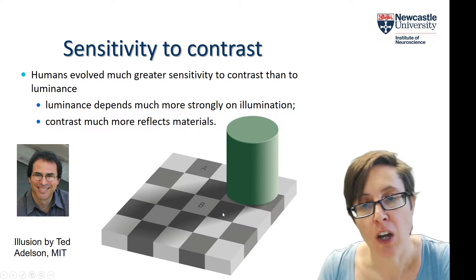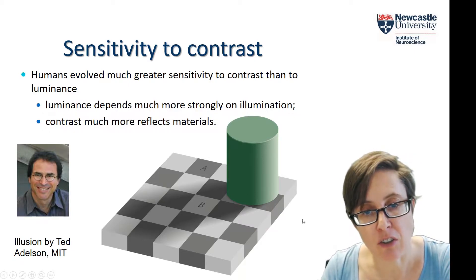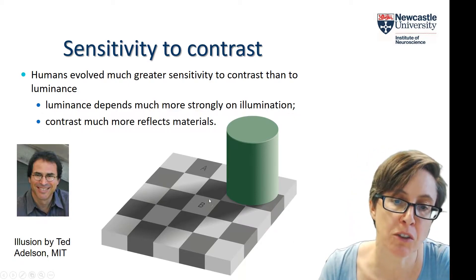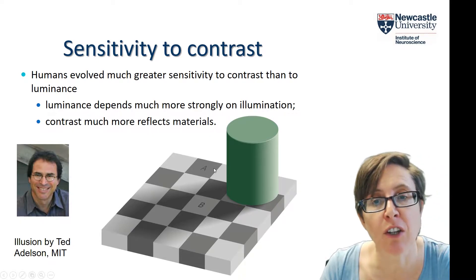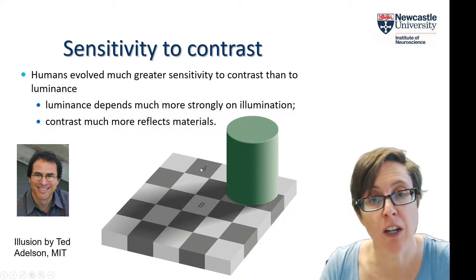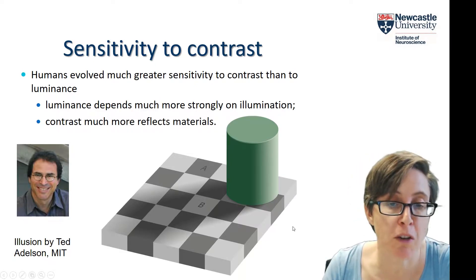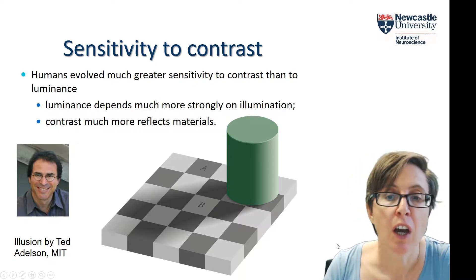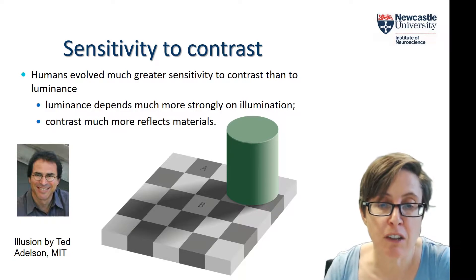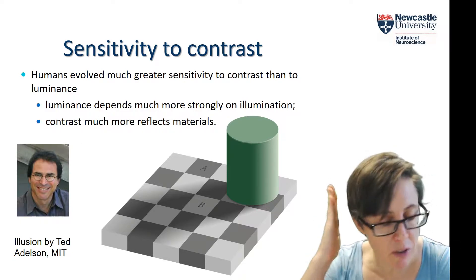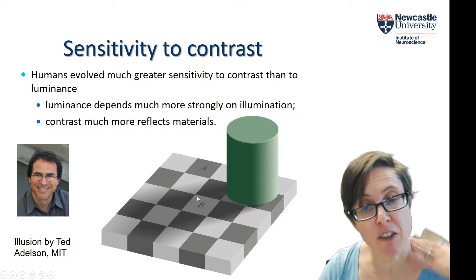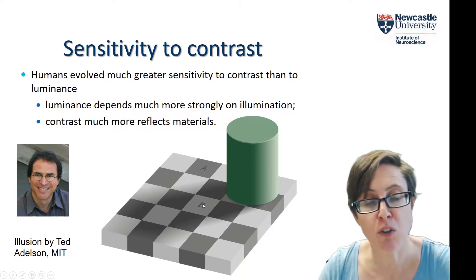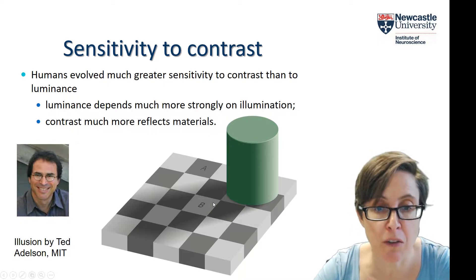Why does this illusion work? You can see that the cylinder is casting a shadow over it, so that's part of the reason my visual system understands that B is in fact a bright type of material being viewed in shadow, whereas I interpret patch A as being an intrinsically darker material that just happens to have more light falling on it. What we evolved to sense is the material that things are made of, so we have this immediate impression of different perceptual brightness that's quite independent of the objective luminance of the two patches.